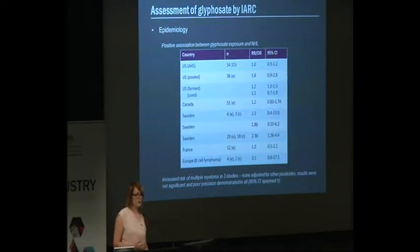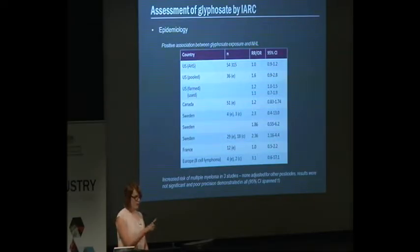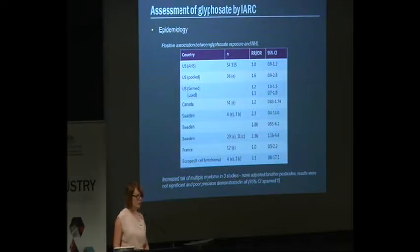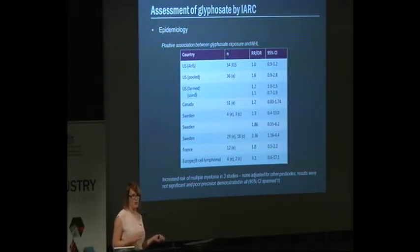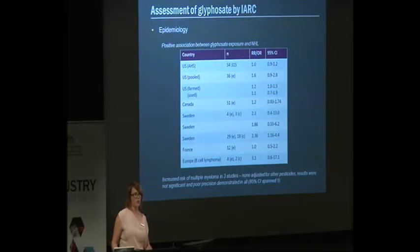The rest of the studies were smaller, with smaller sample sizes spread across the US, Canada and Europe. Some had only four exposed cases or two or three controls. Most of the odds ratios or risk ratios were around one. The ones that were slightly increased — around two or three — had 95% confidence intervals that were either quite wide (indicating poor precision), spanned one (meaning there's actually no difference between groups), or both. IARC looked at this data and determined that the results indicate limited evidence for carcinogenicity in humans.